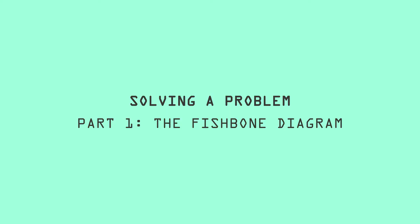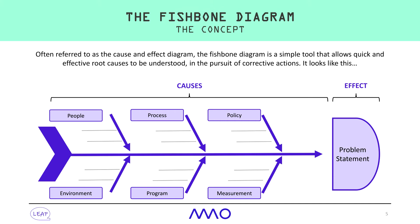Solving a problem using the fishbone diagram. The fishbone diagram, also known as the Ishikawa, herringbone, or cause-and-effect diagram, is a visualization tool that helps you to categorize the potential causes of a problem in order to identify its root cause. It's used for problems big and small, and in the real world we use it particularly as a brainstorming activity for teams when solving a complex problem.